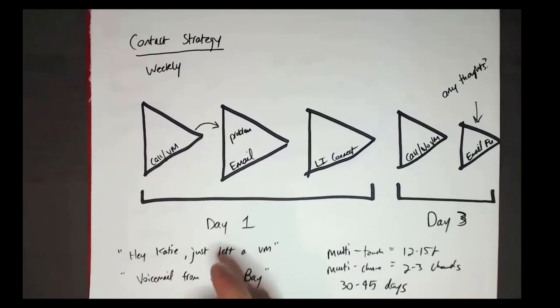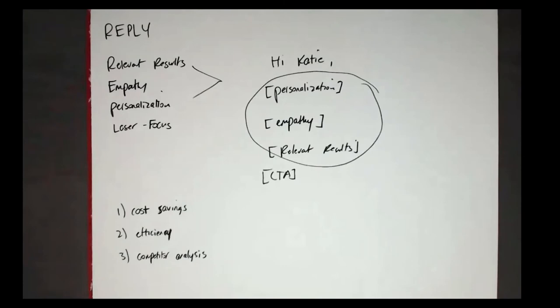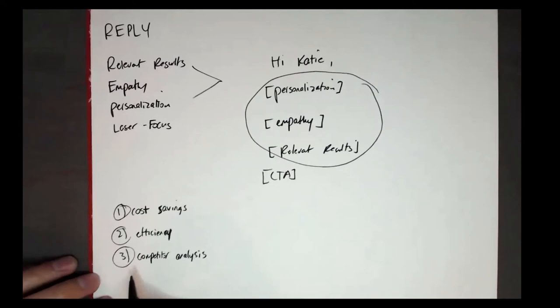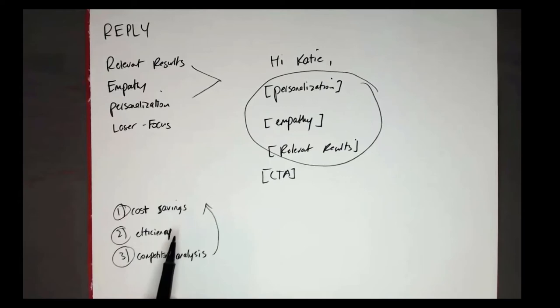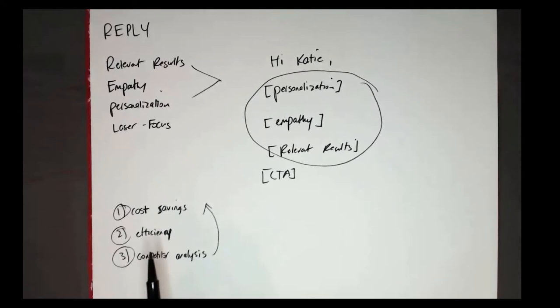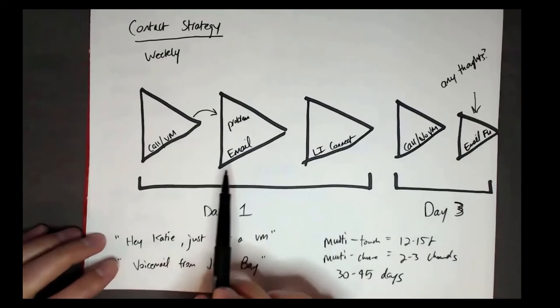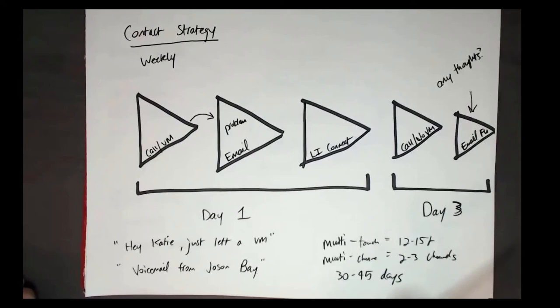The daunting part of sequencing is thinking you have to create a 15-touch sequence all at once. Don't — just create the first week's worth of work. If you create the first day's content, that buys you a couple days to do the next step, which is easy: just a call and an 'Any thoughts' email. Take it one week at a time and adjust as you go. You'll often find that one problem resonates more than the others, so you shift — lead with that. Cold calling gives you immediate feedback on which problem lands.